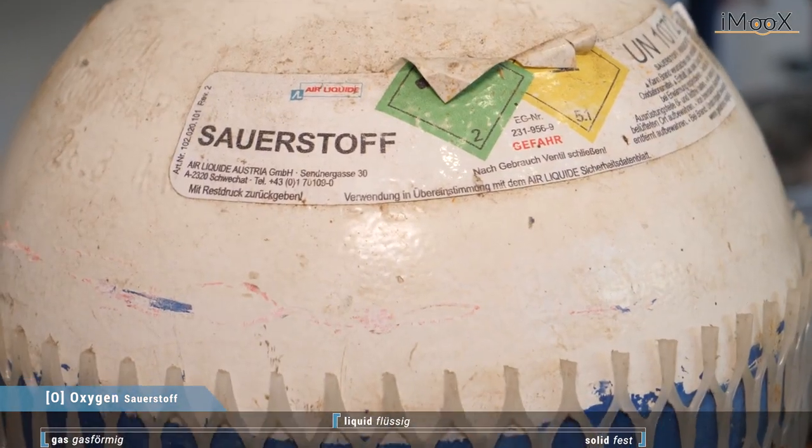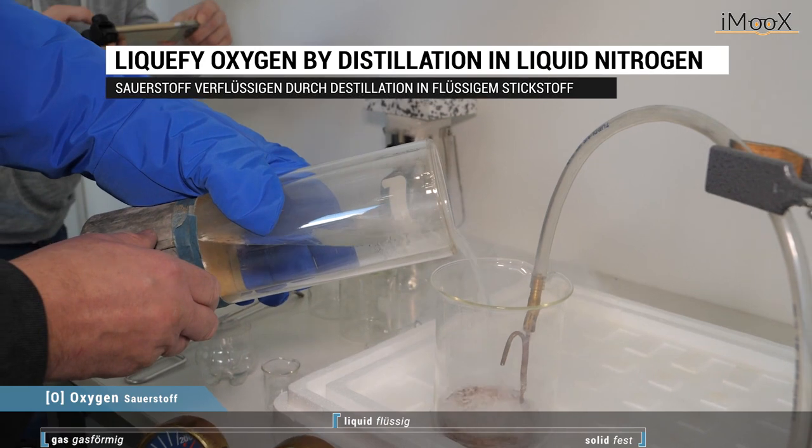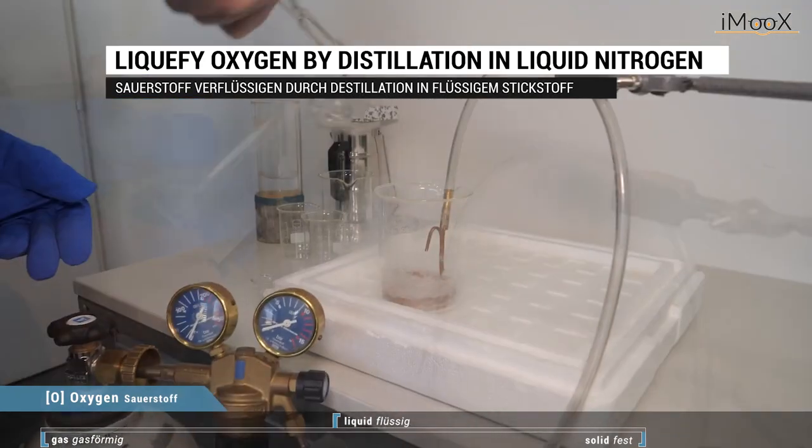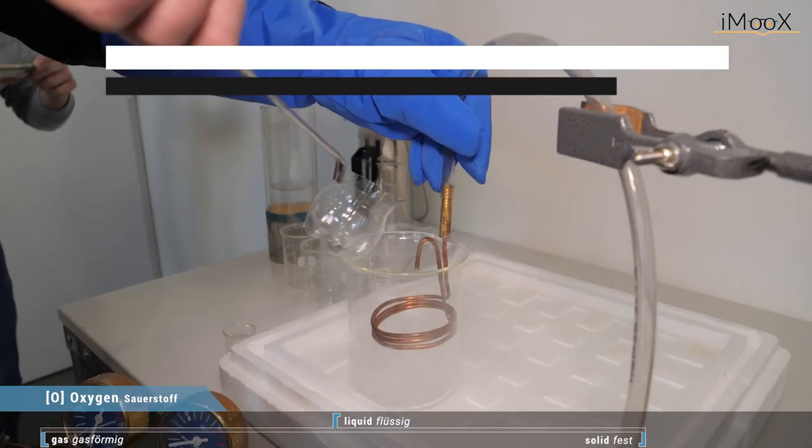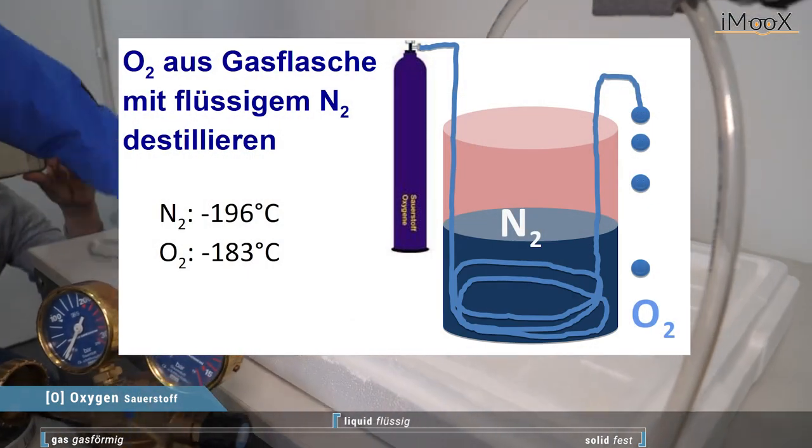So today we want to make solid oxygen. First of all, we have to make liquid oxygen and we do that by distillation in a copper tube which is cooled by liquid nitrogen.